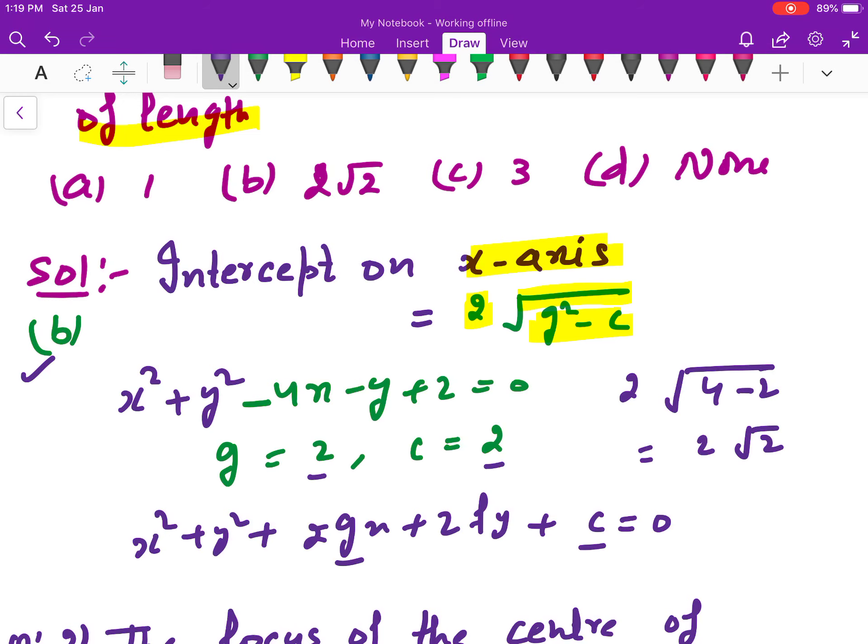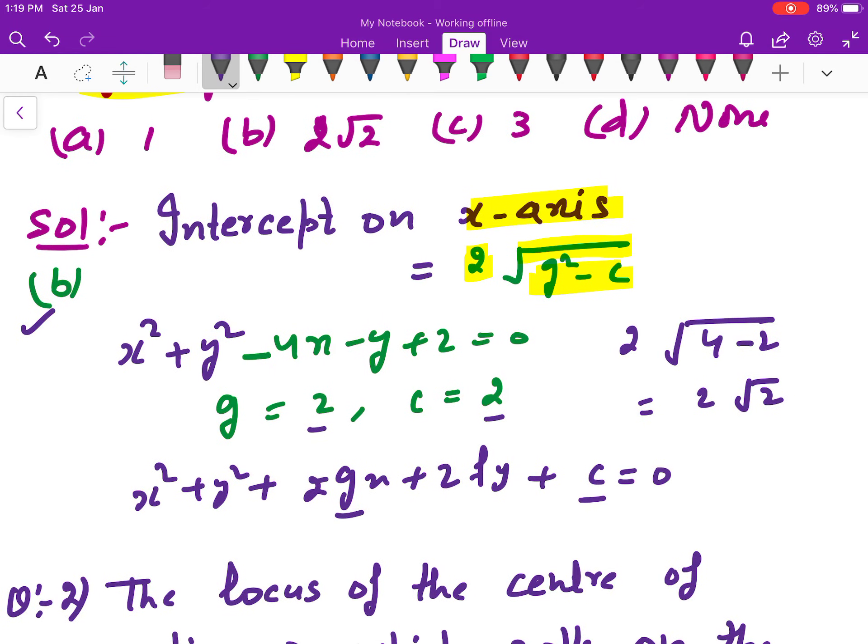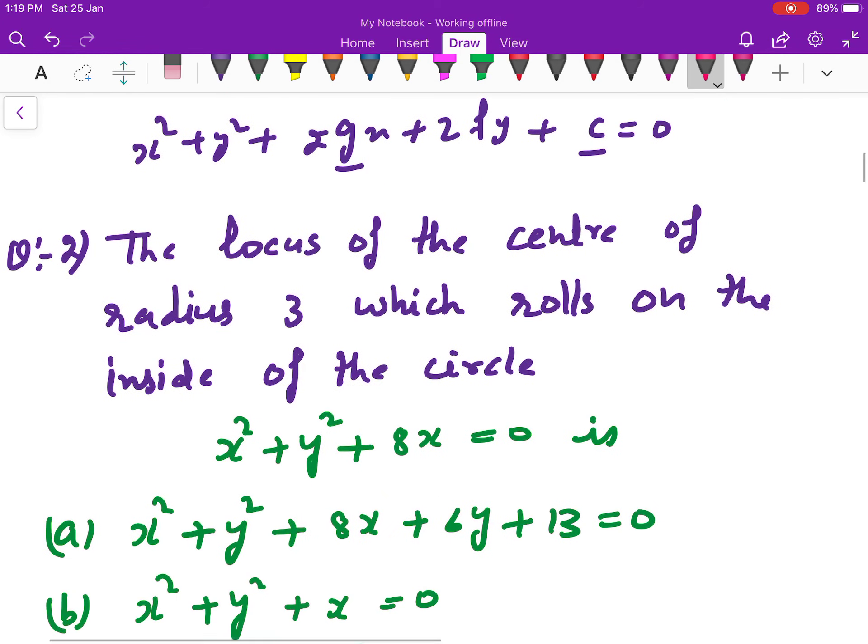So this will be b. In the same way, the intercept on y-axis, if y-axis comes, will be twice into f square minus c. This will be the same way. Next step.